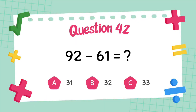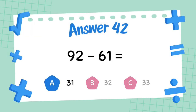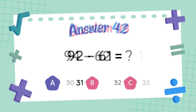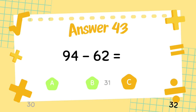What is 92 minus 61? The answer is 31. What is 94 minus 62? The answer is 32.